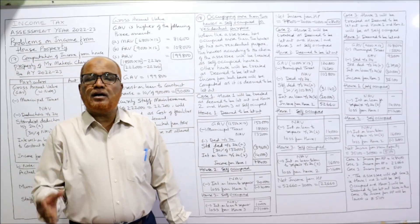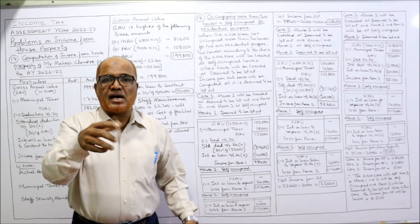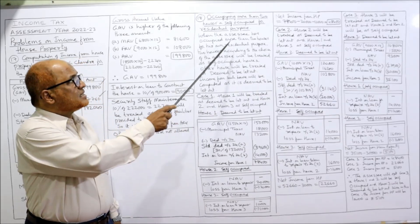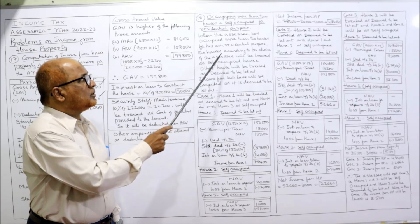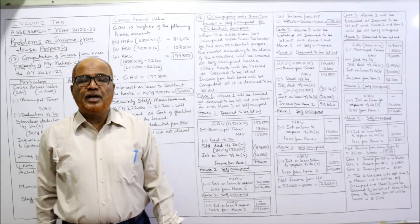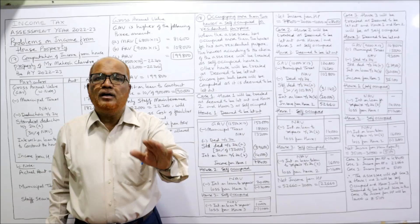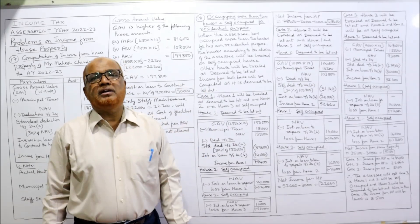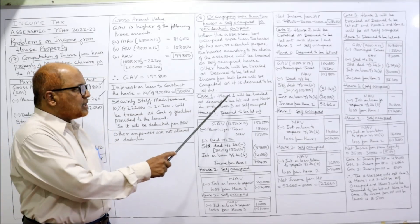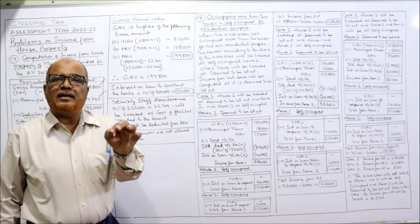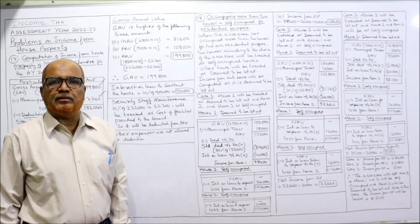When the assessee occupies more than two houses for his own residence, the Income Tax Act specifically provides that two houses according to the choice of the assessee will be treated as self-occupied, and the third house will be treated as deemed to be let out — just like let out. In Case 1, house number 1 will be treated as deemed to be let out, and houses number 2 and 3 will be treated as self-occupied.